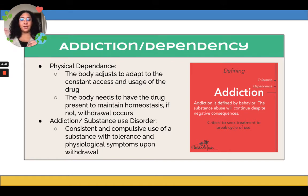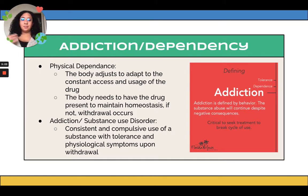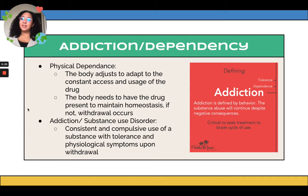If you stop taking that drug or substance, withdrawal starts occurring. The difference between dependence and addiction is mostly defined by behavior — addiction is the consistent and compulsive use of a substance, with tolerance and psychological symptoms upon withdrawal, such as vomiting and tremors. This compulsive use continues even despite negative consequences.